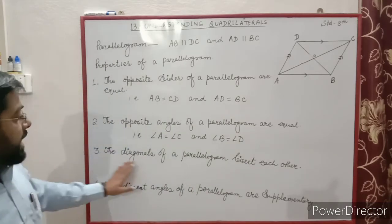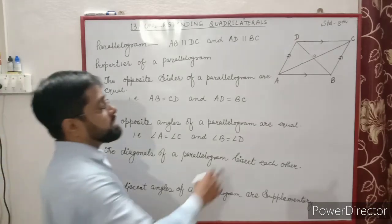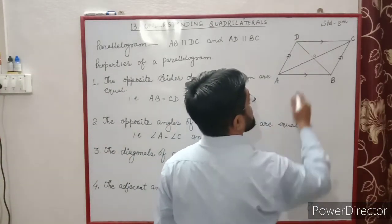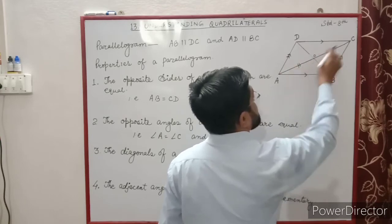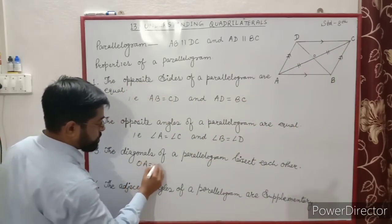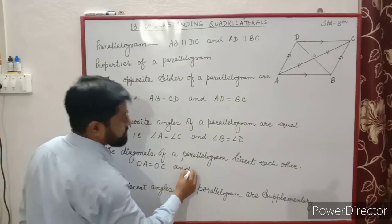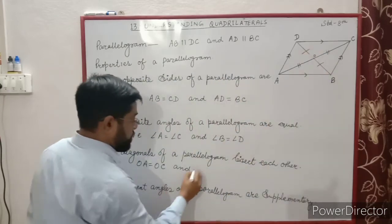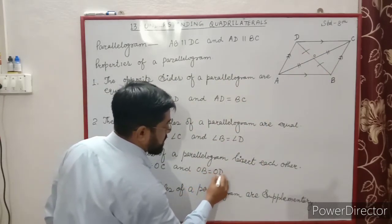Third property: the diagonals of a parallelogram bisect each other. AC and BD are two diagonals that bisect each other. That means OA is equal to OC, and OB is equal to OD.